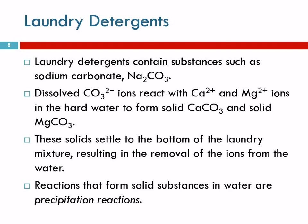Calcium carbonate and magnesium carbonate are insoluble substances and just come out of solution. They settle in the bottom of your washer but won't get on your clothes or interfere with the soap. So the sodium carbonate removes the calcium and magnesium ions. This is an example of a precipitation reaction — these are reactions that form solid substances in water.